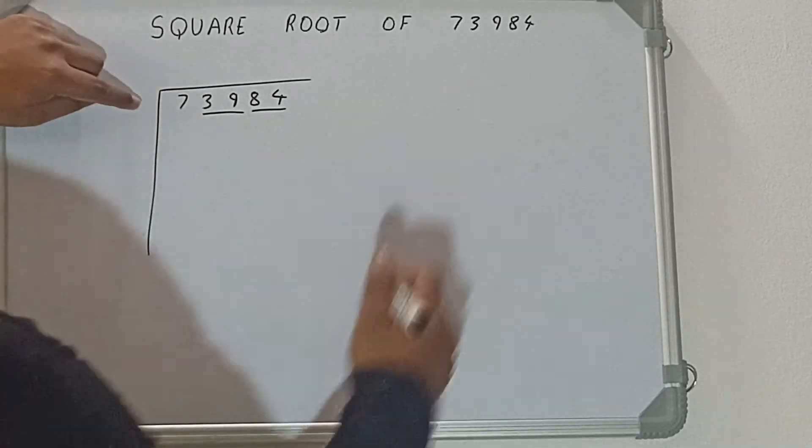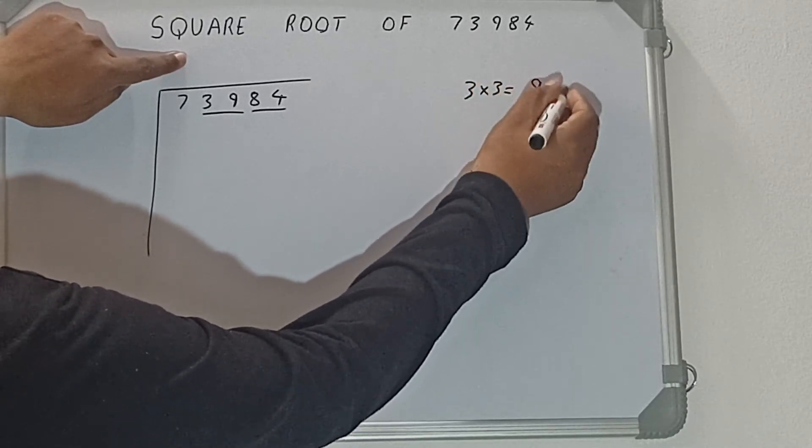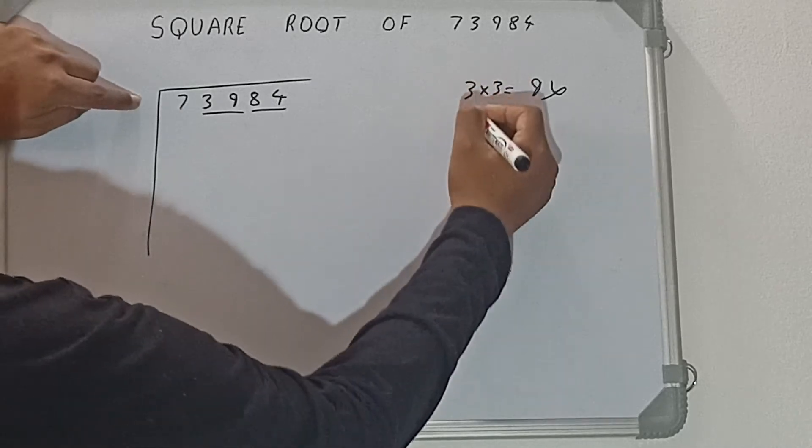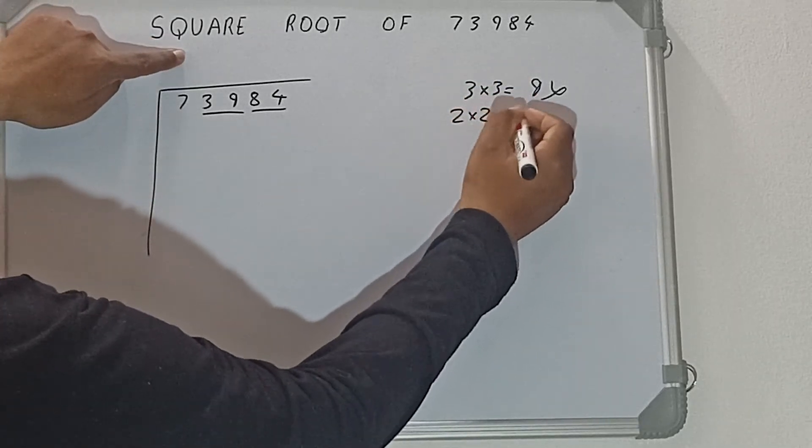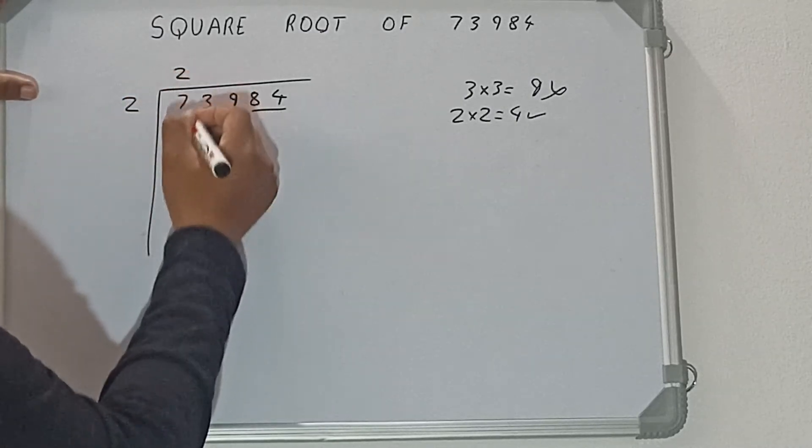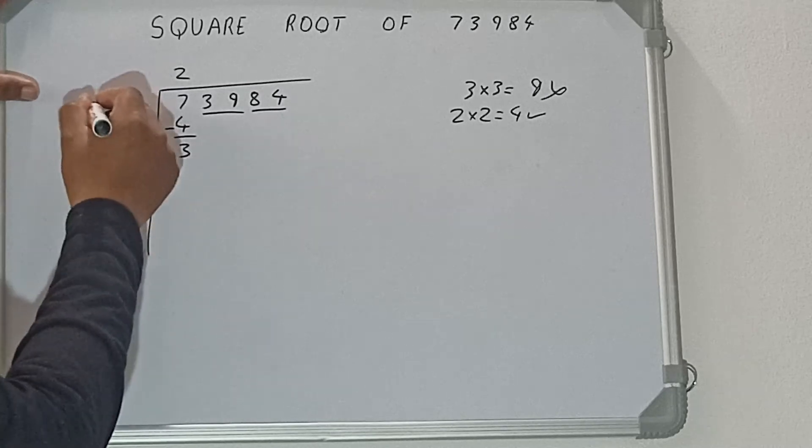So if we write 3 here and 3 here, that will be 9, which is greater than 7, so we cannot take it. If we write 2 here and 2 here, it will be 4, which is good to take. So 2 here and 2 here, 4 subtract, 3 will be left.